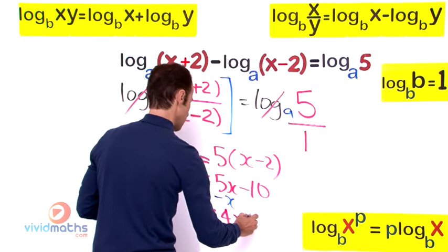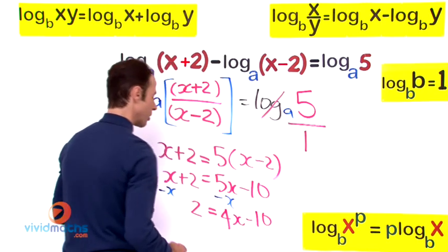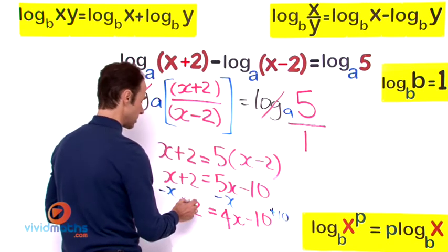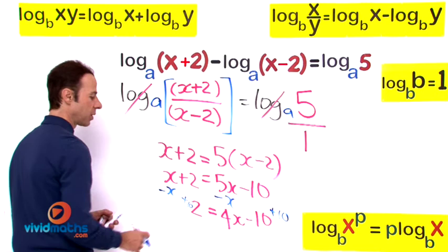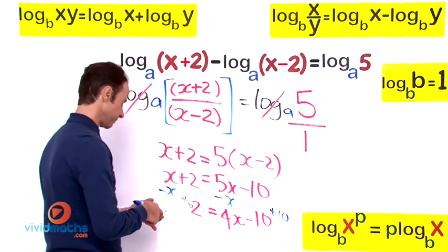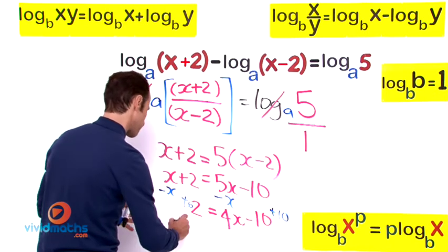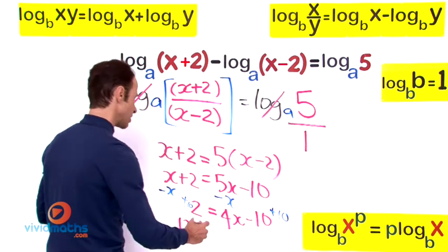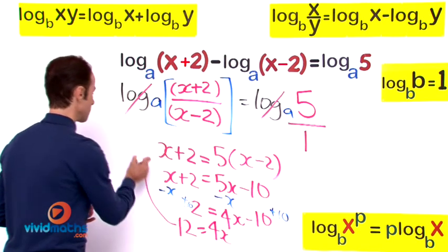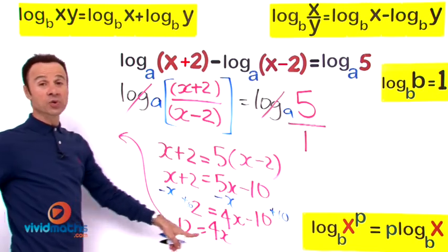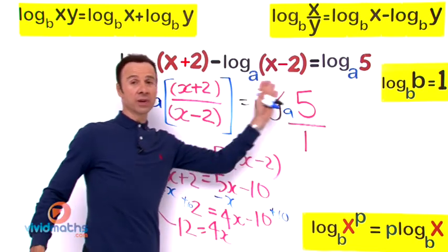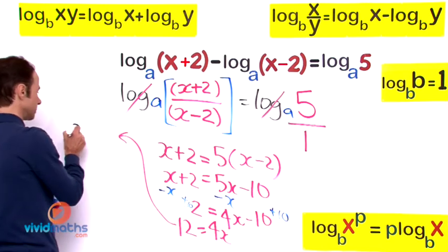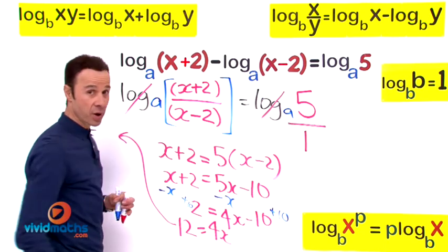How about we add 10 to both sides? So let's add 10 and add 10 to that side. So 10+2 gives us 12. That means we're going to have 12, and that's going to equal, well that 10 disappears, 4x. Let's bring it up here: 12 equals 4x. So the answer solving this logarithmic equation is dividing both sides by four.